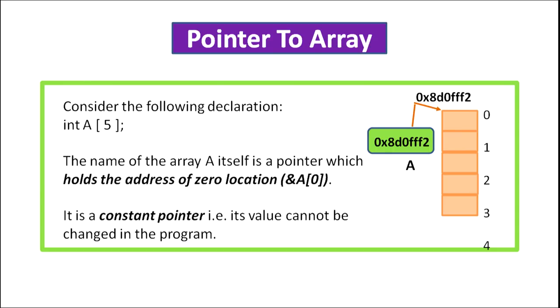Pointer to array. Consider the declaration int a[5]. Here a is an array of size 5. Whenever we declare an array, memory is allocated to it and it starts from a certain memory address. The name of the array is always a pointer and it holds the starting address of the array, that is the address of the zero location or the address of the first element a[0]. A pointer to an array is always a constant pointer, that is its value cannot be changed in the program. Pointers can be used to print all the values of an array.